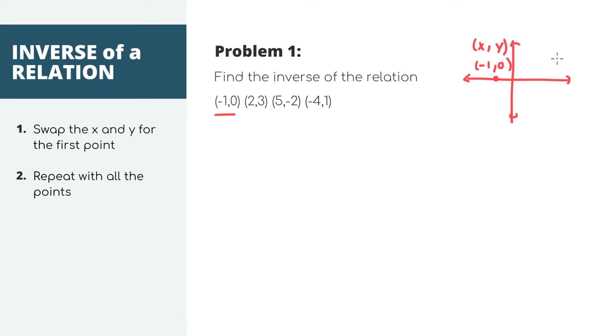And now remember when we said that the inverse is just when you swap the x and the y. So to find the inverse of this point, we're just going to swap x and y, which is now 0, negative 1, where 0 is the new x value and negative 1 is the new y value. This is the inverse.